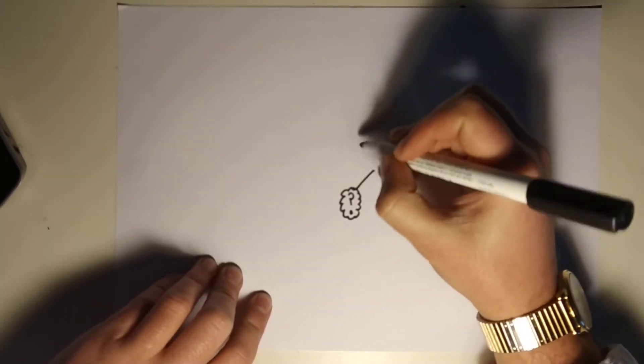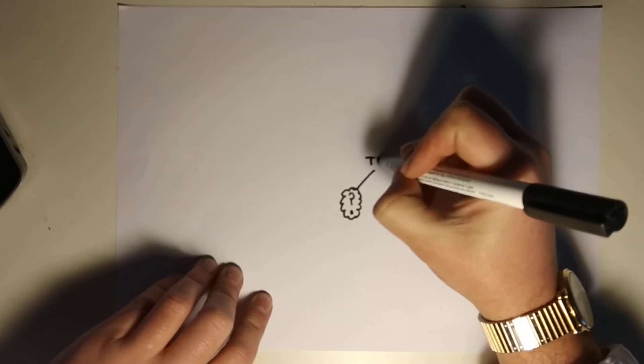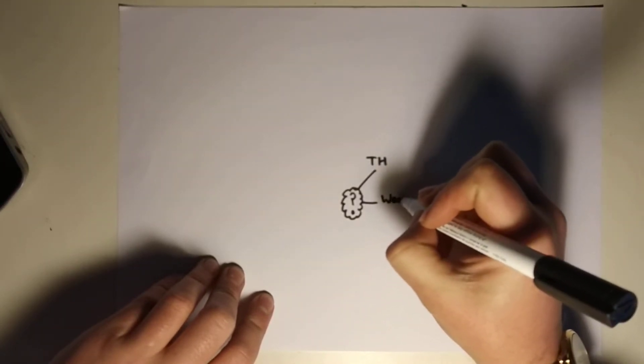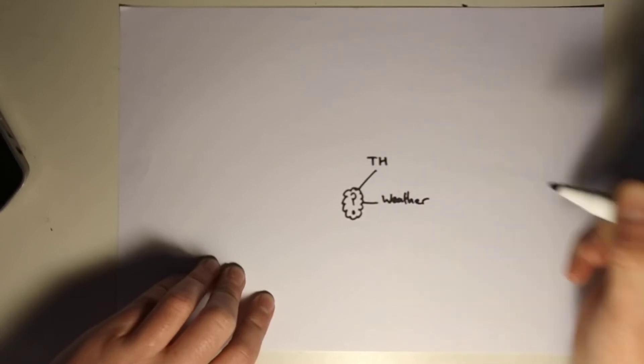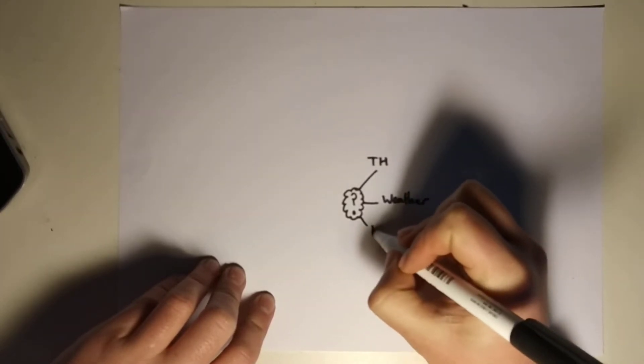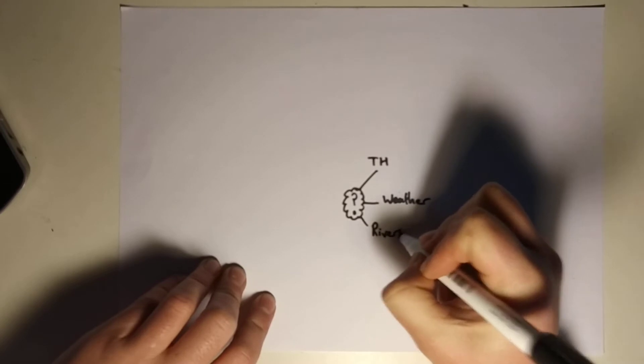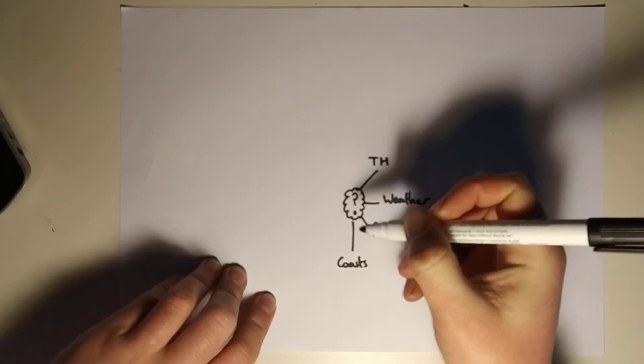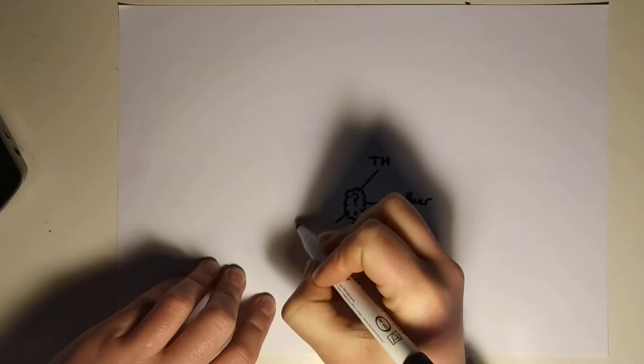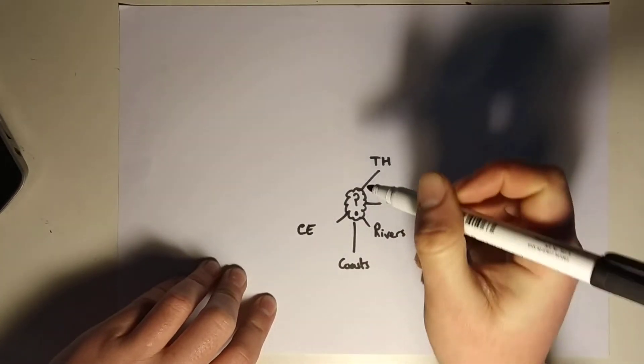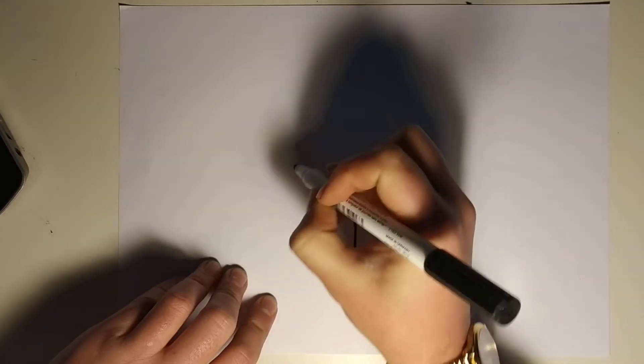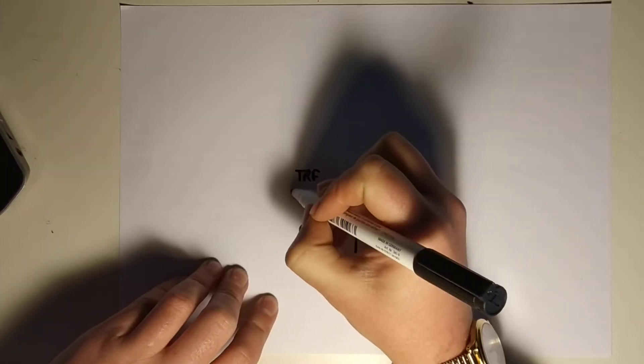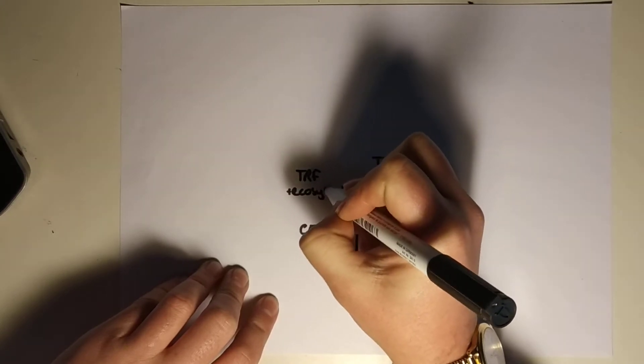First off let's go through the main topics. So tectonic hazards, I'm just going to put TH, weather, rivers, coasts, cold environments, I'm just going to put CE, I can't be bothered to write it, and then tropical rainforests and ecosystems. Okay and I'll just put ecosystem there.